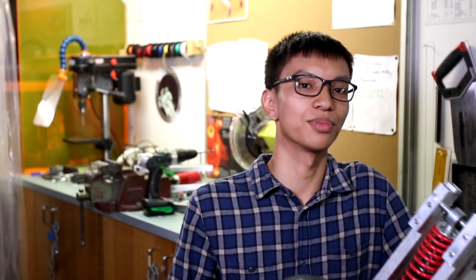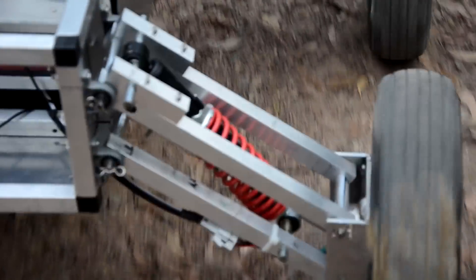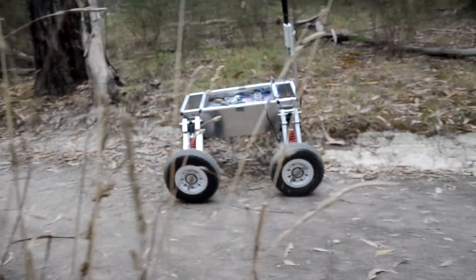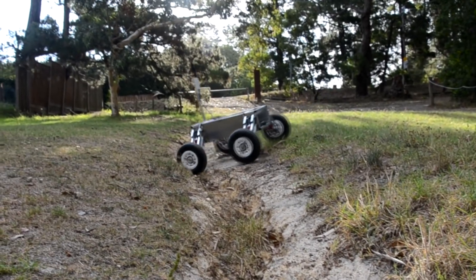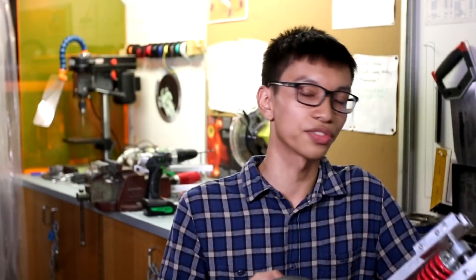The rover's drag system uses a simple double wishbone design with dampened springs, which allows the rover to maintain maximum wheel contact with the ground, even on boulder fields or soft sand.